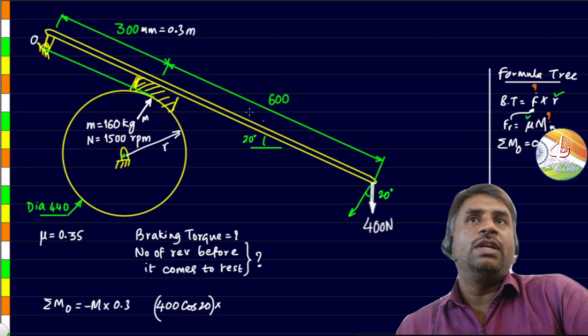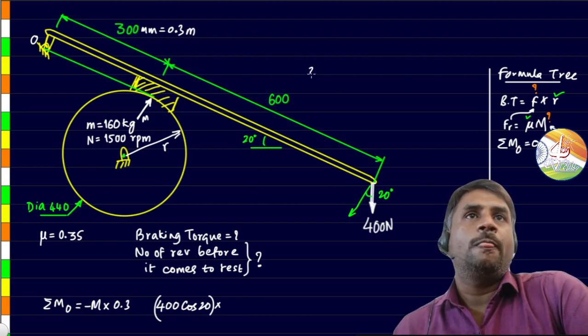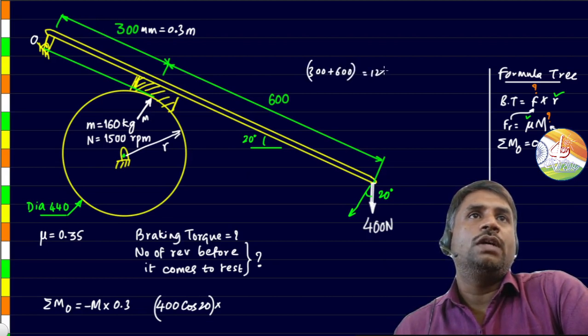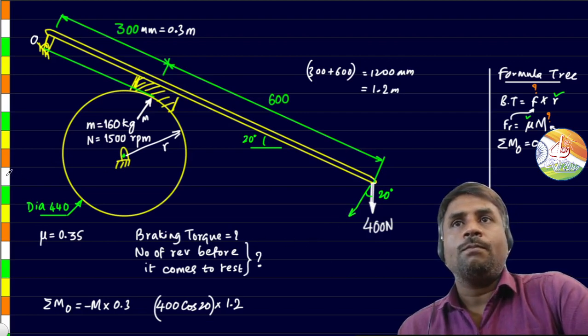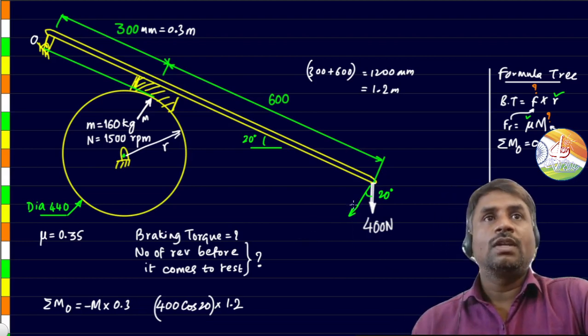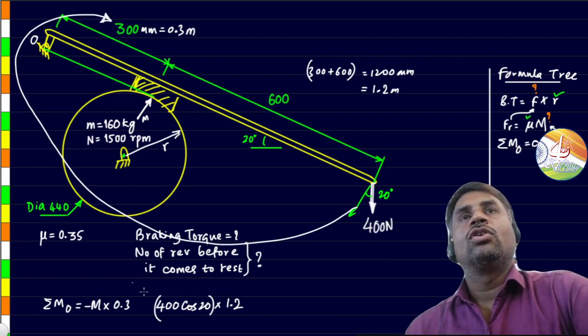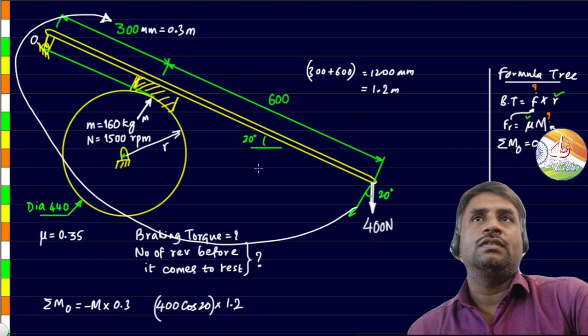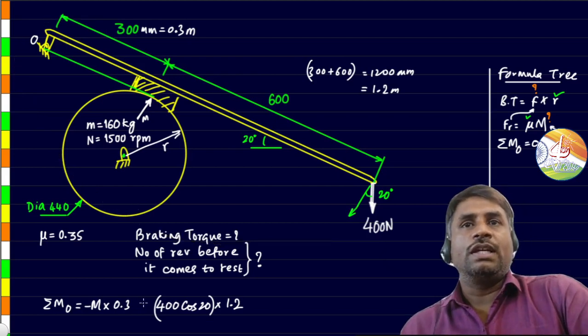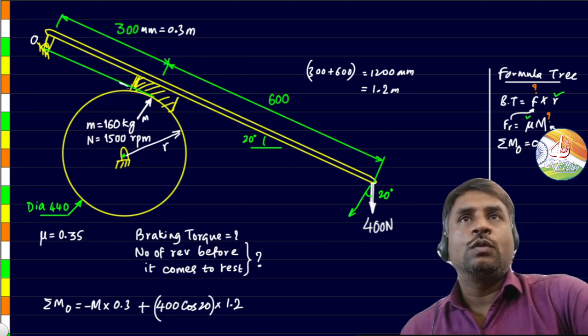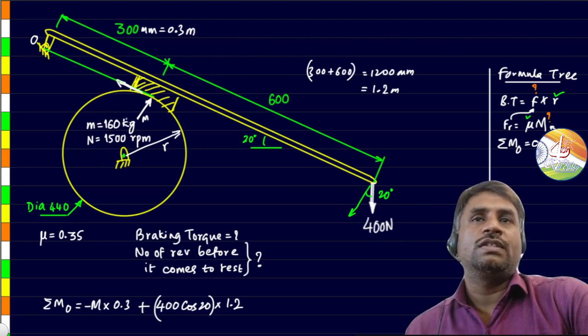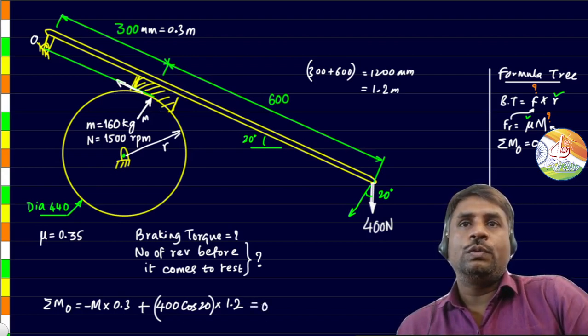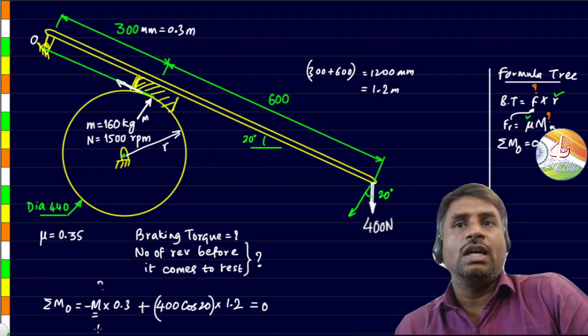Either we will have to find this perpendicular distance or we can take a perpendicular component of this and continue to apply the same distance. So I will go ahead with the perpendicular component. The angle here will also be 20 degrees. This component over here is 400 times cos 20. The perpendicular distance of this particular component is 300 plus 600, so 1200 mm. That if I convert it to meters gives me 1.2 meters. The friction force is exactly passing through the focal point and hence the moment created because of that will be 0, so we can neglect it.